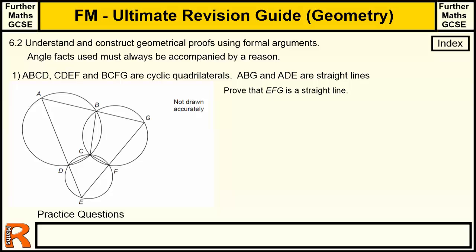6.2: Understand and construct geometrical proofs using formal arguments. Angle facts must always be accompanied by a reason — any time you use a fact, you have to say why.